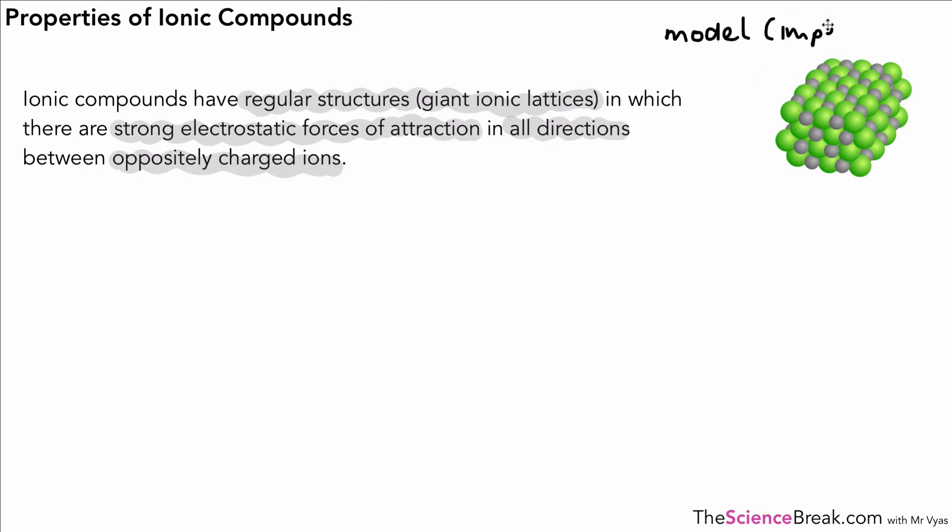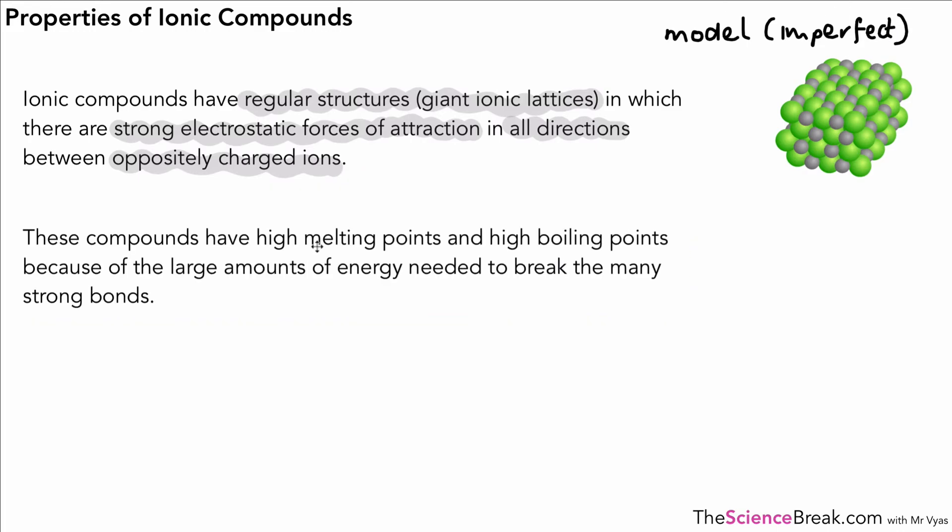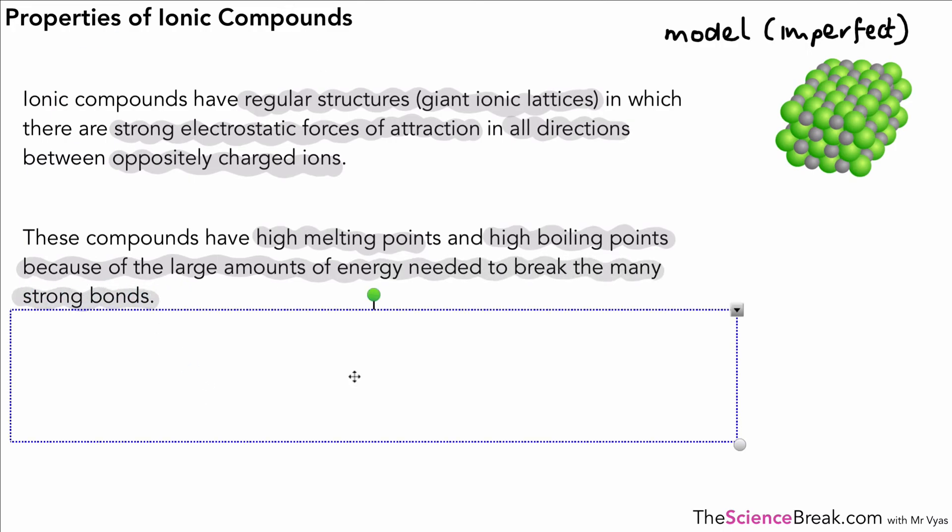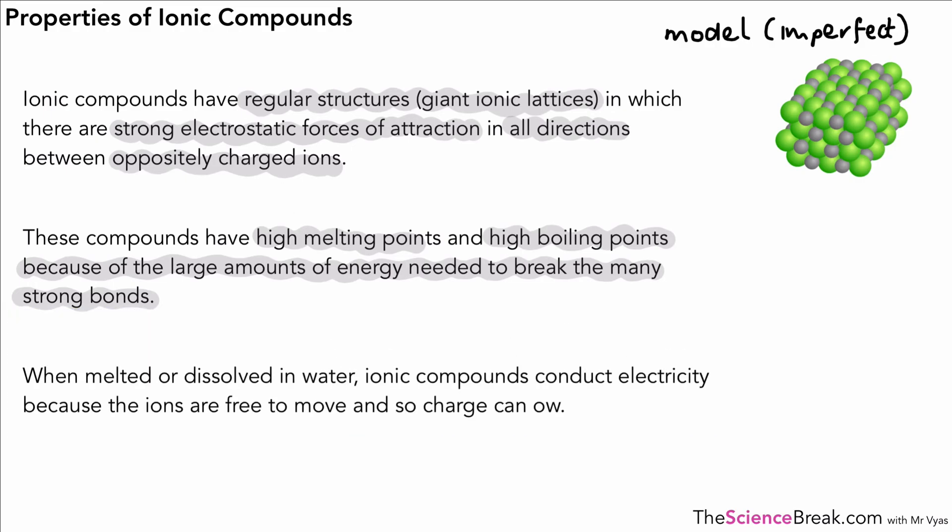Here's our model, we know it's imperfect from our previous video but it gives us a very good idea of how ionic compounds behave. The second thing is that ionic compounds have high melting points and high boiling points, and the reason for this is because we need a large amount of energy to break the many strong bonds between the ions. Again, all very important key terminology and key words.